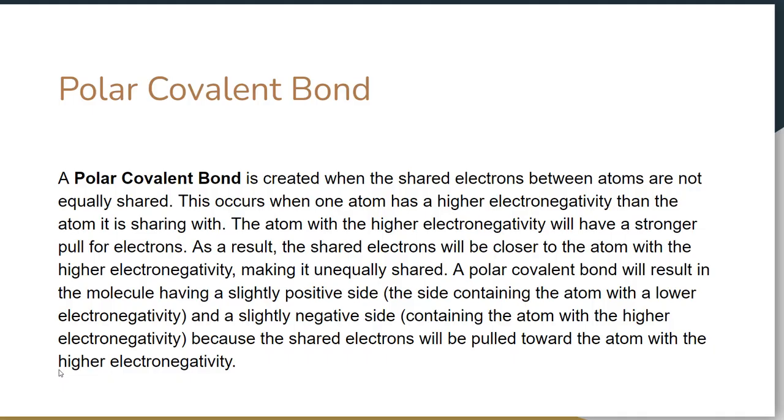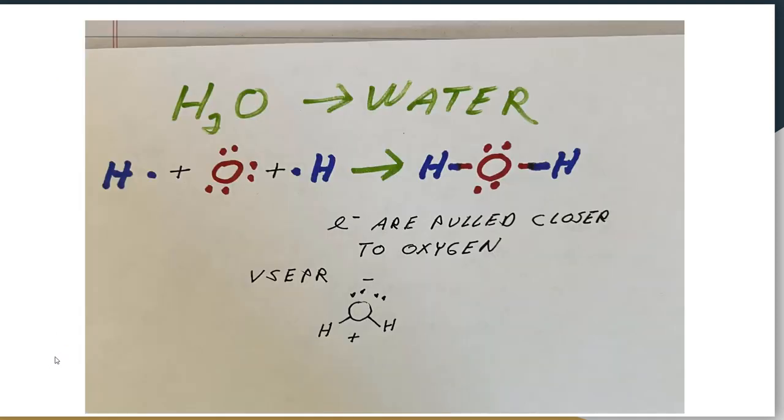A polar covalent bond is when one atom has higher electronegativity. We're going to take a longer look at this in a video which will be coming up rather quickly. As a result, the shared electrons will be closer to the atom with a higher electronegativity, and so therefore it is referred to as a polar covalent bond. A good example of this is water. Water is H2O. Oxygen has six, so it's going to need two more to fulfill the octet rule.